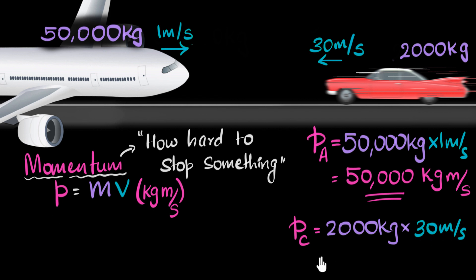And that will be, let's see how much that is, 2 times 3 is 6, 1, 2, 3, 4, 60,000 kilogram meters per second.